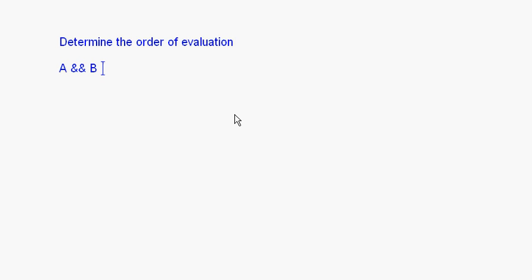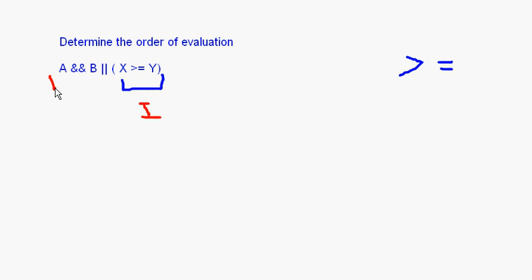One last question before we end: determine the order of evaluation in this expression — a AND b OR x greater than or equal to y. The greater-than-or-equal-to is evaluated first. Then a AND b is second. Whatever the results of those, the OR operator combines them as the third and final step.